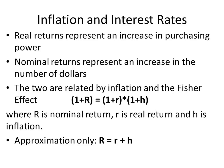A famous economist named Fisher came up with this equation: (1 + R) = (1 + r) × (1 + H), where R is the nominal return (the increase in the number of dollars), little r is the real return (the increase in purchasing power), and H is inflation. We use H rather than I for inflation to avoid confusion with interest rate variables. You could approximate this by adding r and H together, but that's only an approximation — something for a cocktail napkin, not for homework or exams.